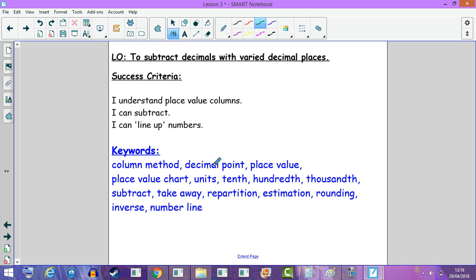Our keywords are column method, decimal point, place value, place value chart, units, tenths, hundredths and thousandths. We're going to be subtracting and taking away, repartitioning, checking our answers through estimation, rounding and inverse, and using a number line method as well.